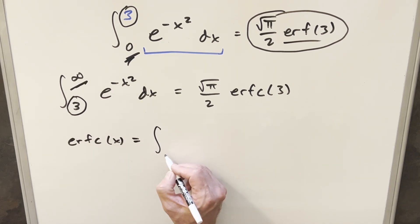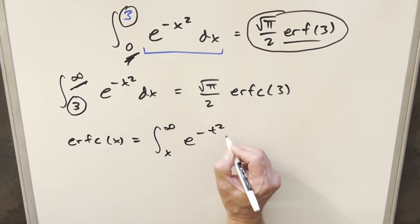again, really similar to the error function, we're starting at x. This time, instead of having it at the upper bound, we're going to infinity, and it's just going to be e minus t squared dt.